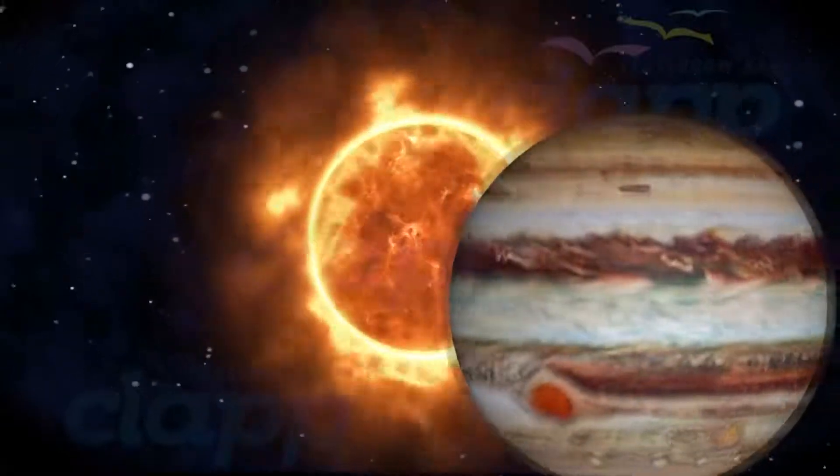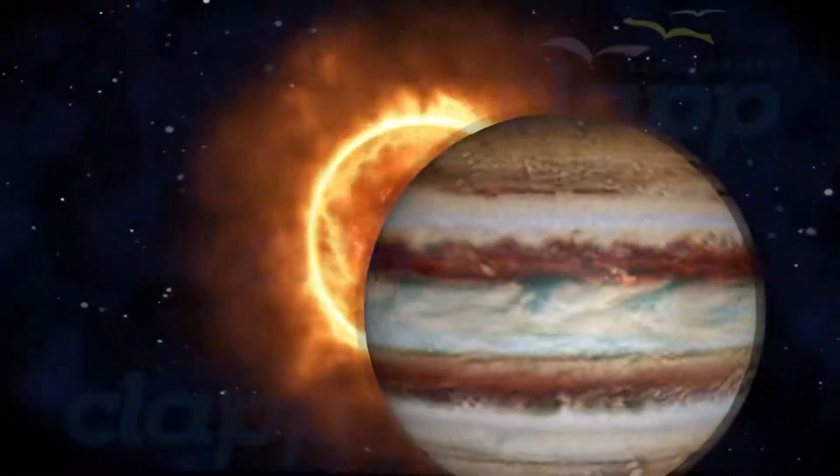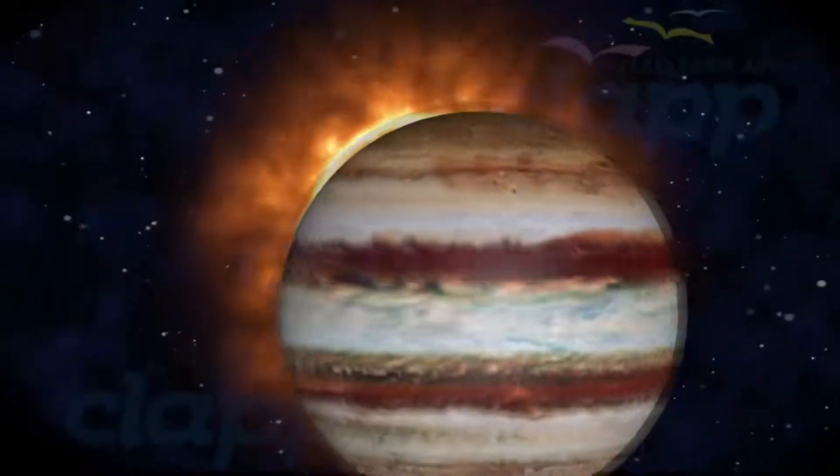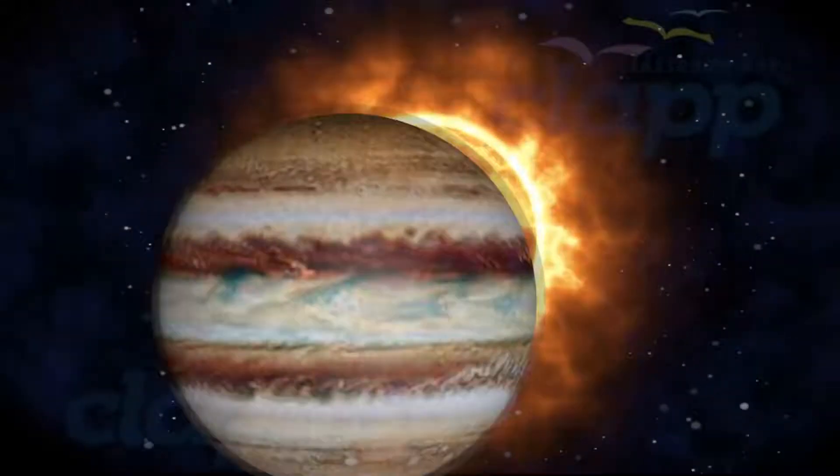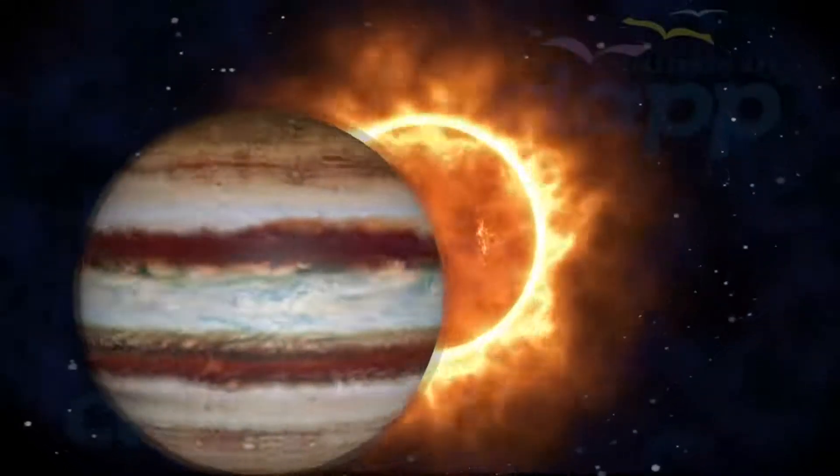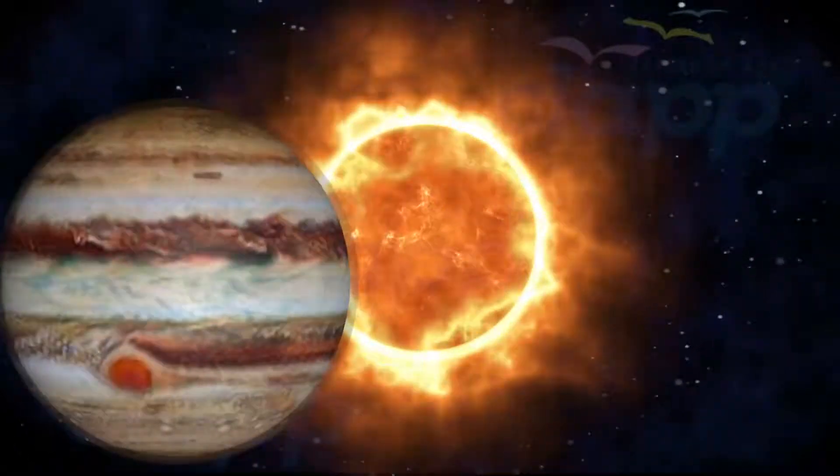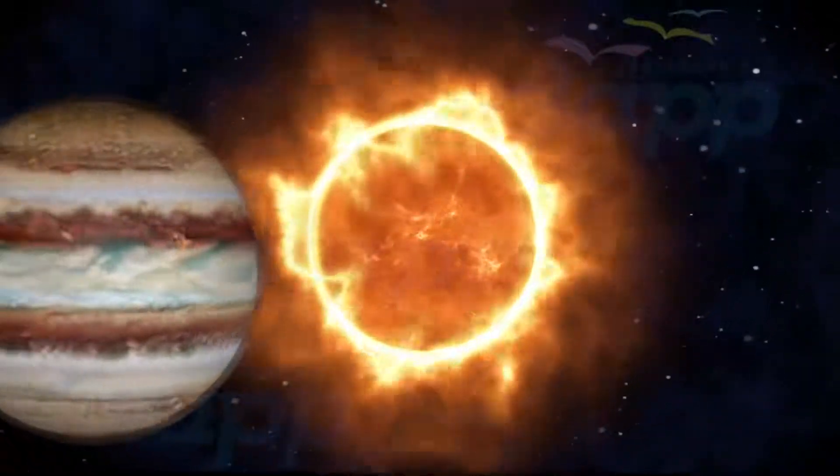Jupiter is an average distance of 746.85 million kilometers away from the Sun. From this distance, it takes light 43 minutes to travel from the Sun to Jupiter.